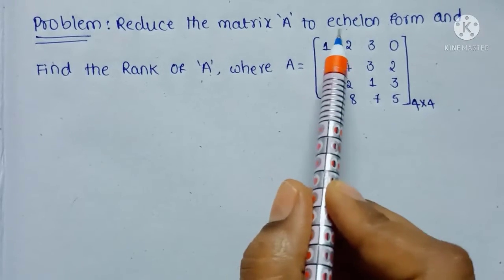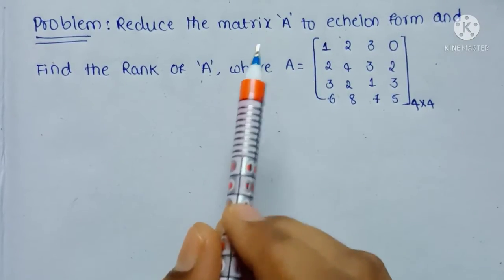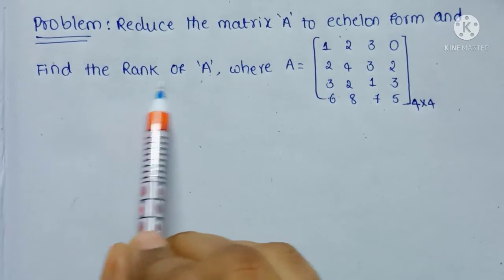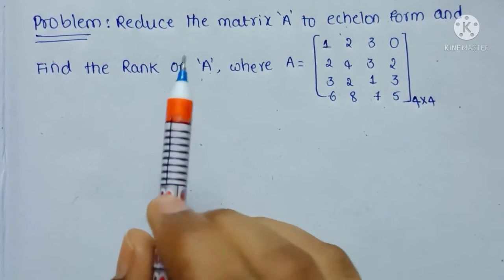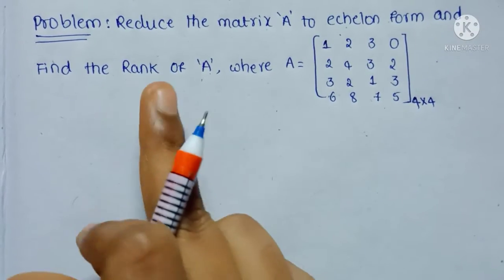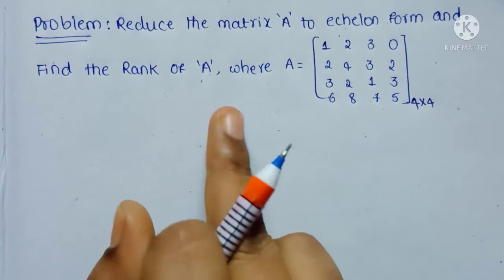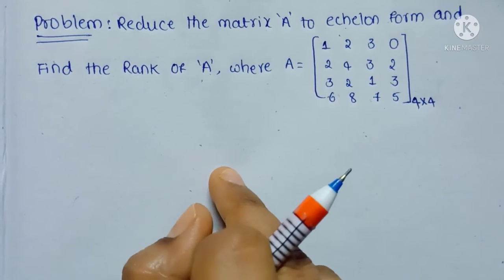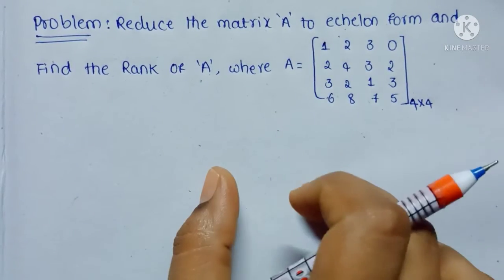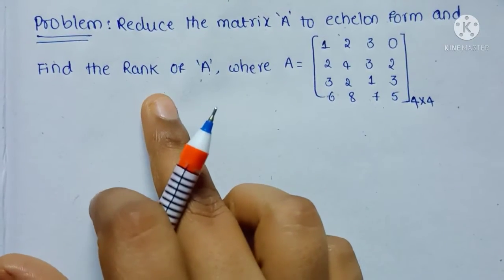Echelon form is used for finding the rank of a matrix. The definition of rank is: the number of non-zero rows in the Echelon form is known as the rank.